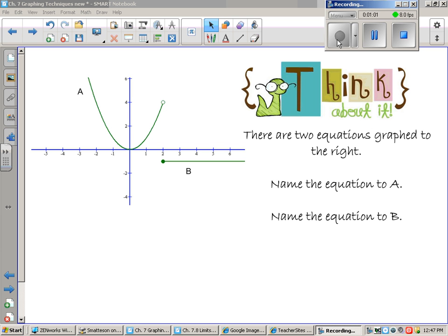And the equation to B, of course, is a line. More specifically, it's a horizontal line, which means that that would be y equals a particular number. And let's just say, for all intents and purposes, negative one.